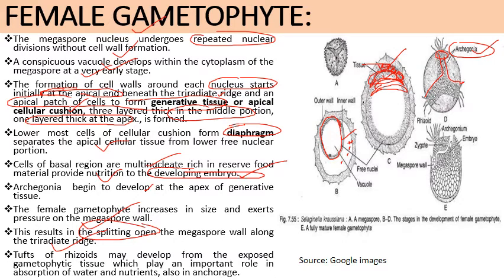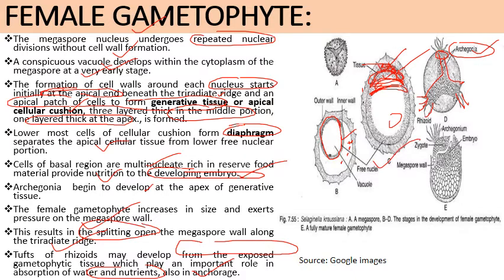Tufts of rhizoids grow from the exposed gametophytic tissue, playing an important role in the absorption of water and nutrients. The mature female gametophyte consists of three portions: the upper generative tissue, the diaphragm, and the lower nutritive region. The upper generative tissue consists of regularly arranged hexagonal uninucleate cells bearing archegonia and rhizoids. The exposed part may develop chloroplasts, though photosynthetic ability is limited. The lower nutritive region cells are multinucleate, irregular in shape, and rich in oil, starch, and albuminous material.